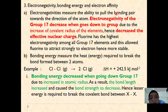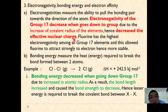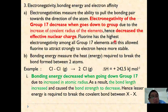Electronegativity measures the ability to pull bonding pair electrons towards an atom. Electronegativity decreases going down group 17 due to the increase in covalent radius, which decreases the effective nuclear charge. Fluorine has the highest electronegativity of all group 17 elements — in fact, it has the highest electronegativity of all elements in the periodic table, making it the most effective at attracting electrons.